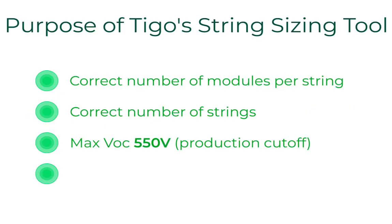Lastly, the tool ensures the inverter will reach its PV start voltage of 80 volts. This is important for lower wattage modules used in shorter strings. We want to make sure each string will hit the minimum 80 volts so that the inverter can start producing and charge the batteries, if applicable.